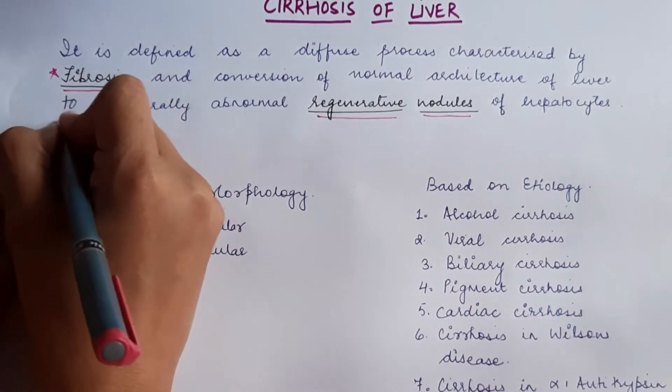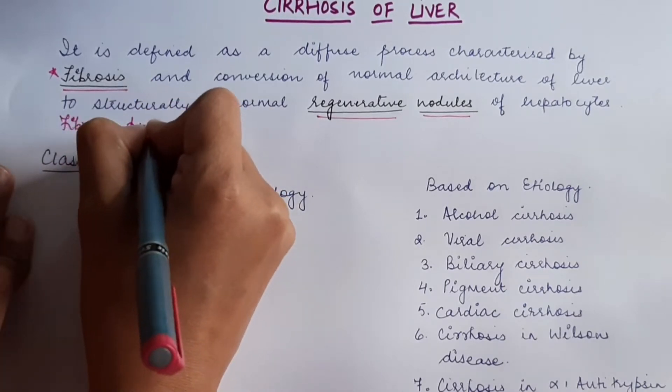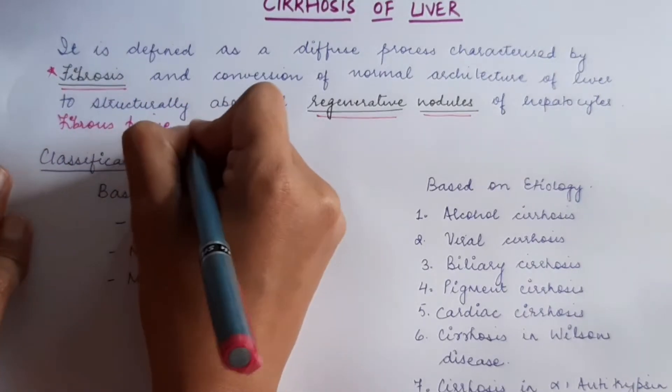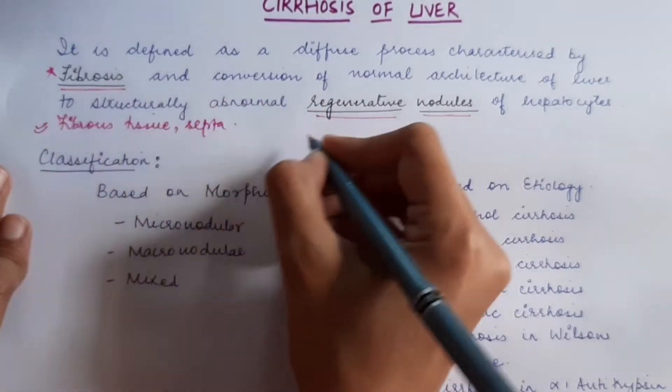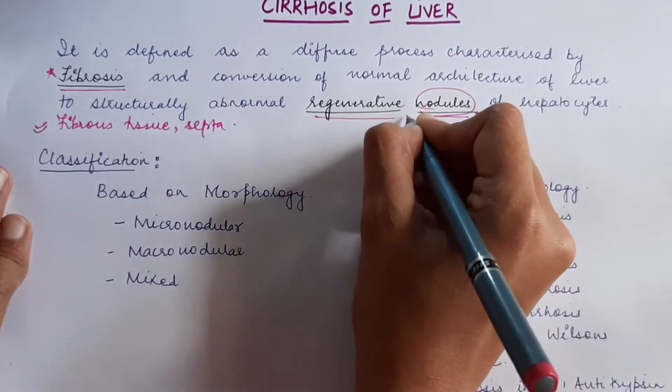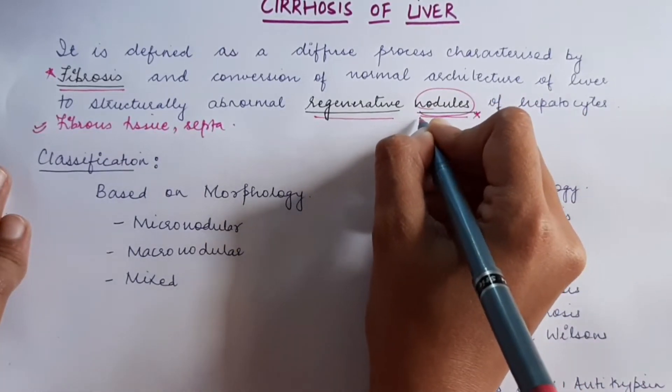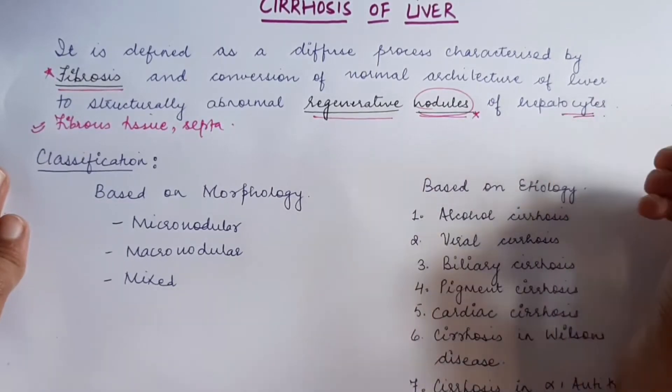that is the formation of fibrous tissue, which helps in formation of septa, and the other thing is we will see regenerative nodules, the newly formed nodules will be present. These will be synthesized by the hepatocytes.